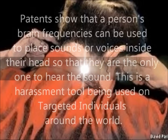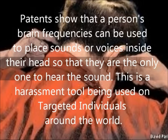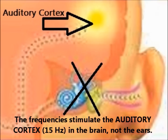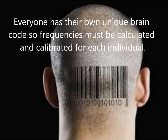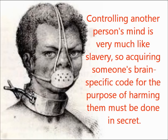Patents show that a person's brain frequencies can be used to place sounds or voices inside their head so that they are the only one to hear the sounds. This is a harassment tool being used on targeted individuals. The frequencies stimulate the auditory cortex in the brain, not the ears. Everyone has their own unique brain code, so frequencies must be calculated and calibrated for each individual. Controlling another person's mind is very much like slavery, so acquiring someone's brain-specific code for the purpose of harming them must be done in secret.